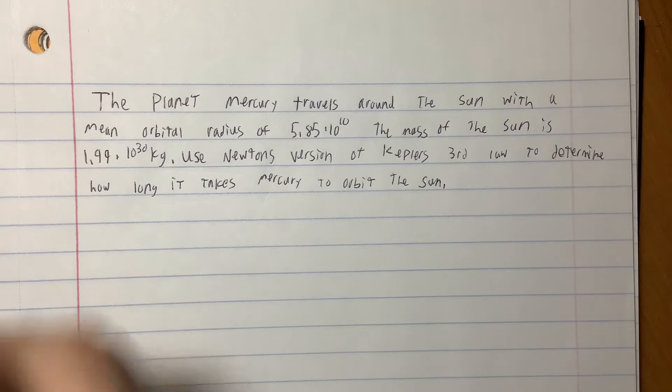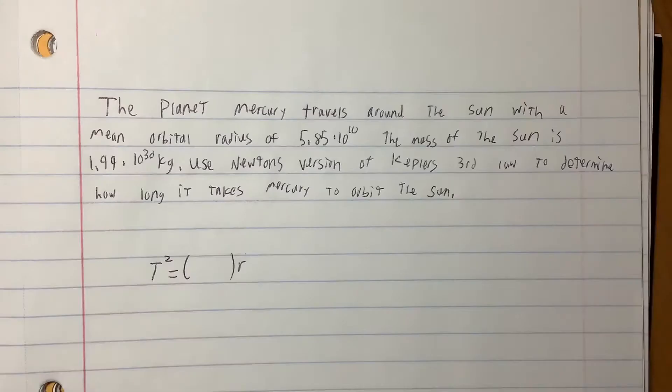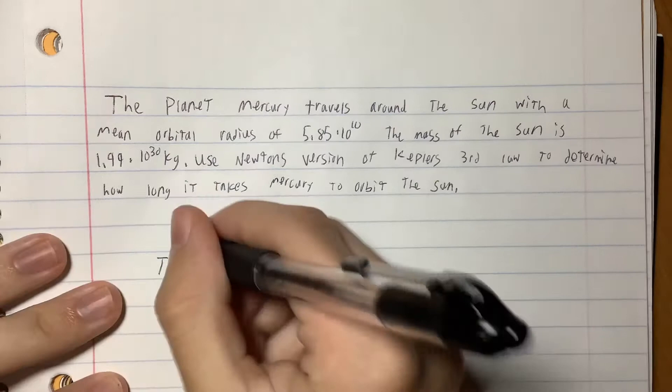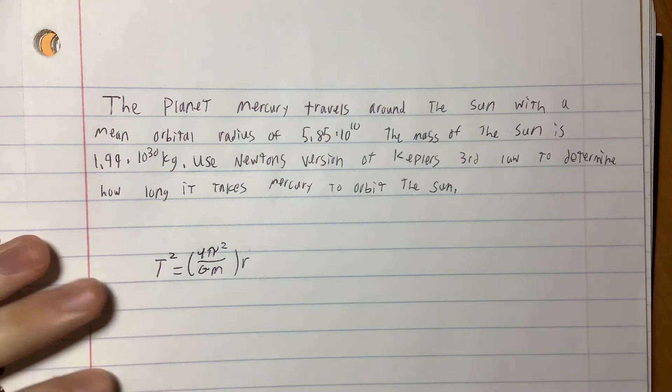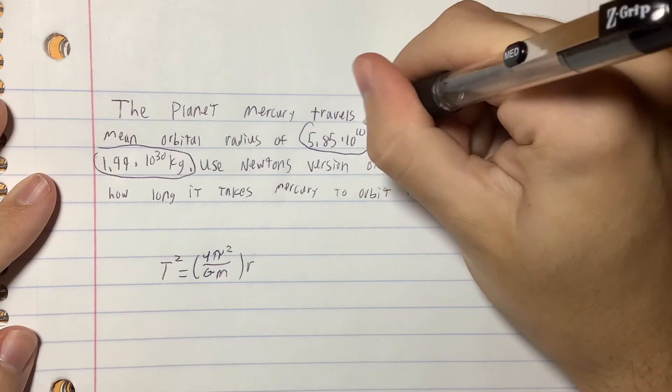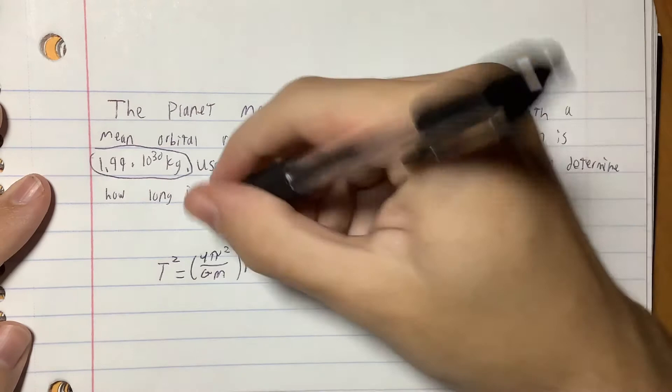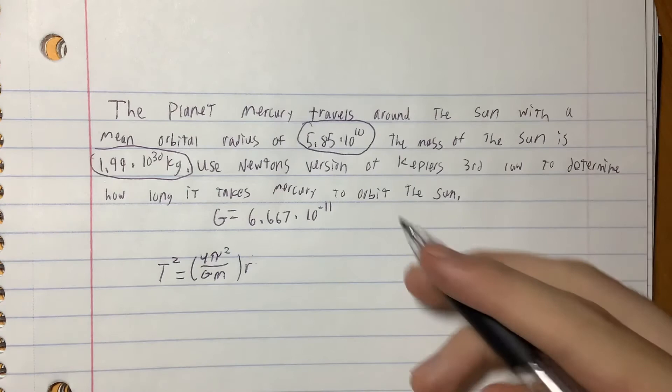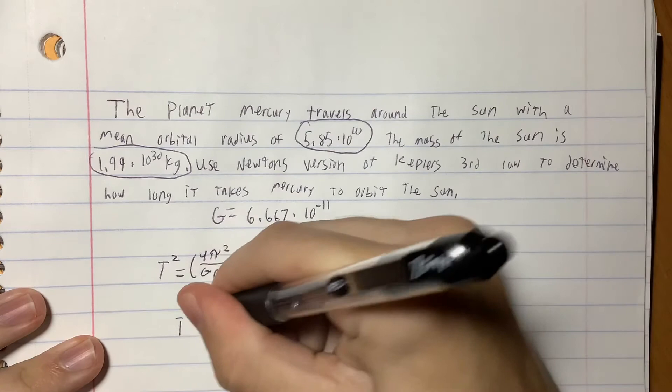We just got this equation: t squared equals 4 pi squared over the gravitational constant over the mass. Looking at this we can see that the mass will be this right here and the radius will be this right here. We already have the mass and the radius, and the gravitational constant will be 6.667 times 10 to the negative 11th. Now we just need to solve for t. So let's plug these in.